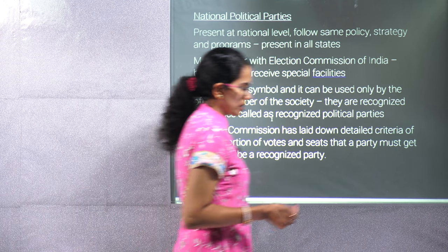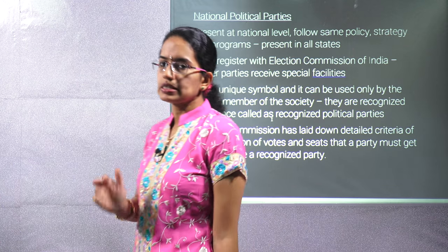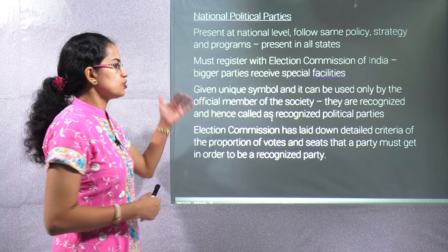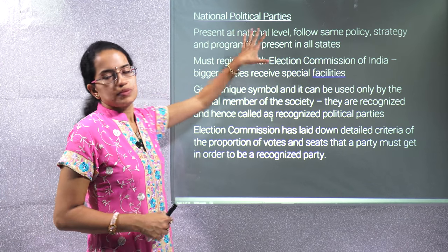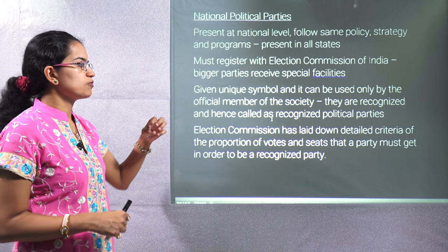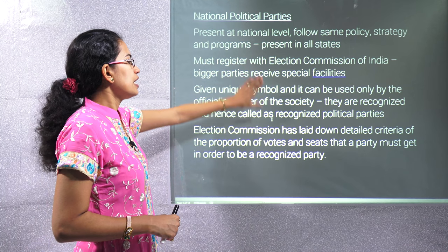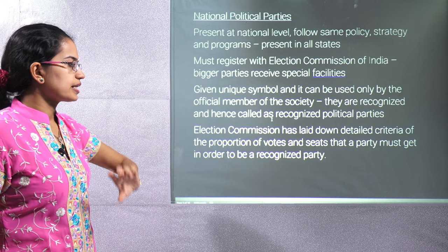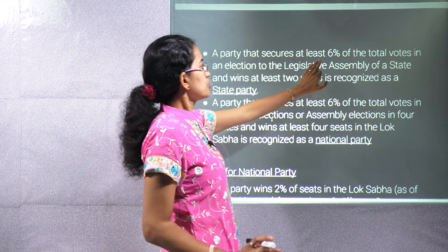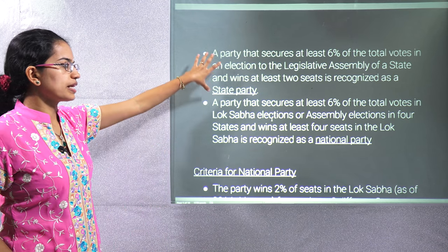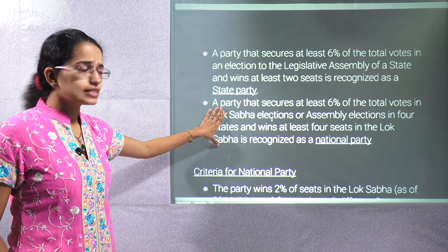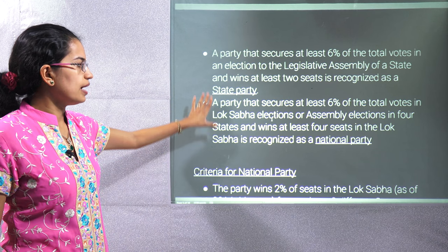In India, there are predominantly two types of parties: national parties and state parties, each with different criteria for recognition. Every national party must register with the Election Commission of India and receives special facilities, including an exclusive symbol. The basic criteria: securing six percent of total votes in legislative assembly elections in at least two states makes a state party, and at least four states with four Lok Sabha seats makes a national party.